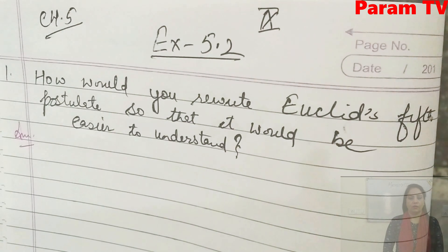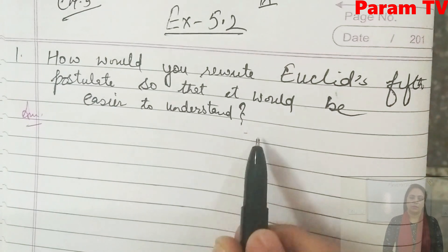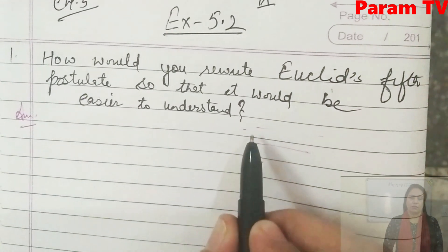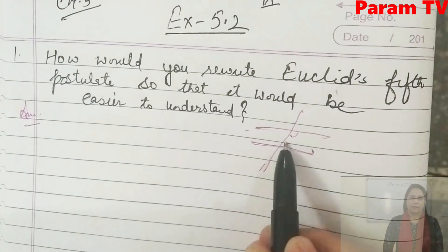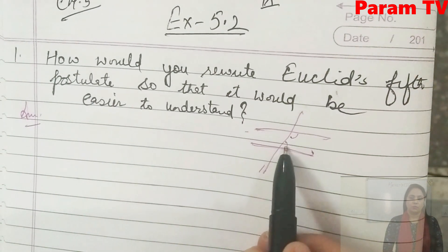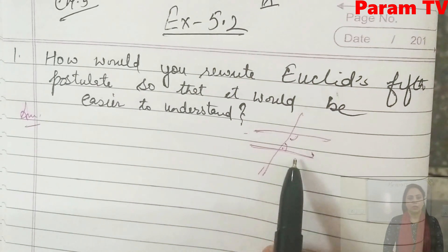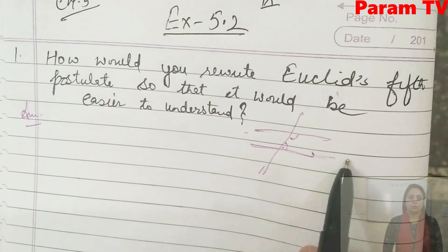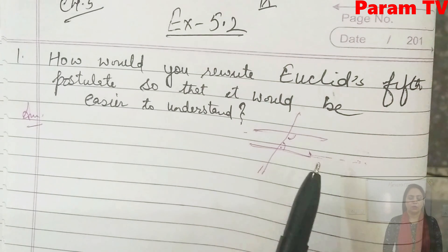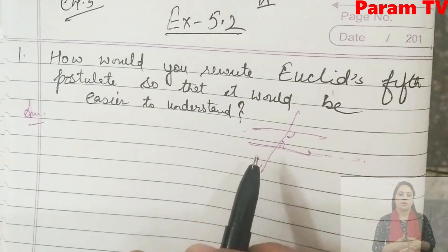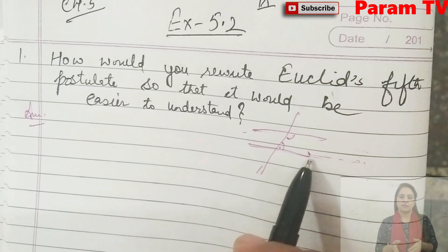I will explain here a little bit. What was the 5th postulate? A line is falling on two lines. If interior angles are taken on the same side and their sum is less than 180, then if we produce this line, they will meet at some point. This was our 5th postulate. So how can you rewrite this? That language was a little tough — how can you write it in simple language?